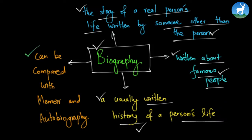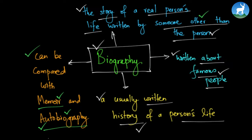Biography can also be compared with other forms of writing like memoir and autobiography, but there's a difference. Biography is written by someone other than the person, but autobiography is written by the person himself. Take, for example, Mandela's Long Walk to Freedom or Mahatma Gandhi's My Experiments with Truth. Those books are actually written by the persons themselves, so we call them autobiographies.